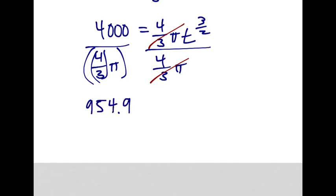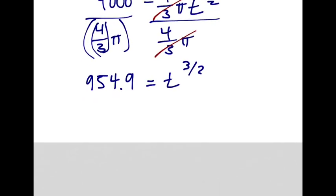954.9. Someone verify for me. 954.9. Yeah. Okay. So that's equal to t to the power of 3 over 2. How do you undo that? How do you just solve for t now?